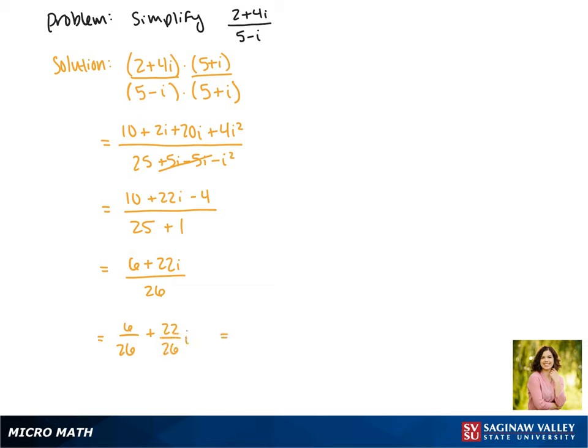These can be reduced to make 3 thirteenths plus 11 thirteenths times i. This is as simplified as we can make our expression, so this is our final answer.